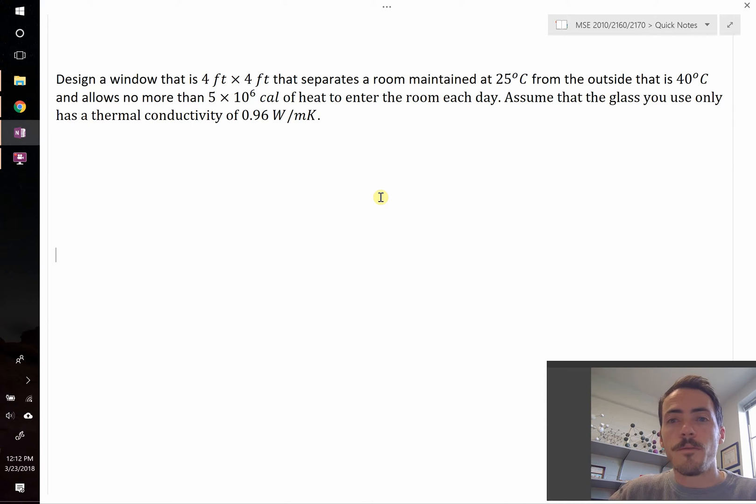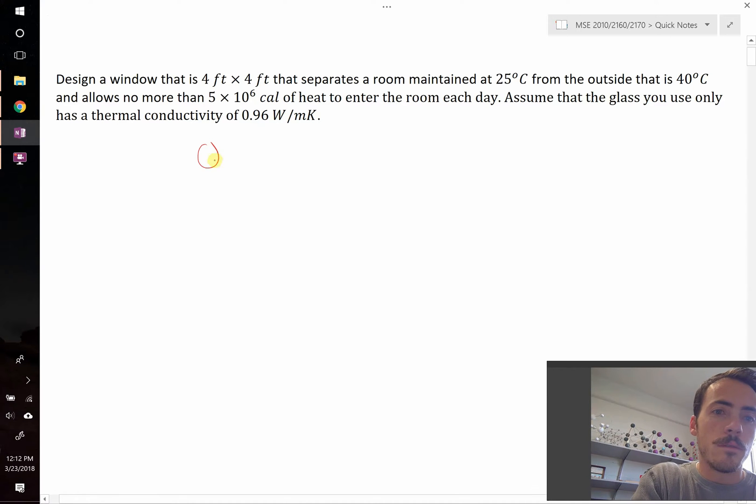So the first thing we need to write down is the equation for steady state flow of heat. This is called Fick's first law. So Q is going to be equal to negative kappa, our thermal conductivity, multiplied by dT over dx.